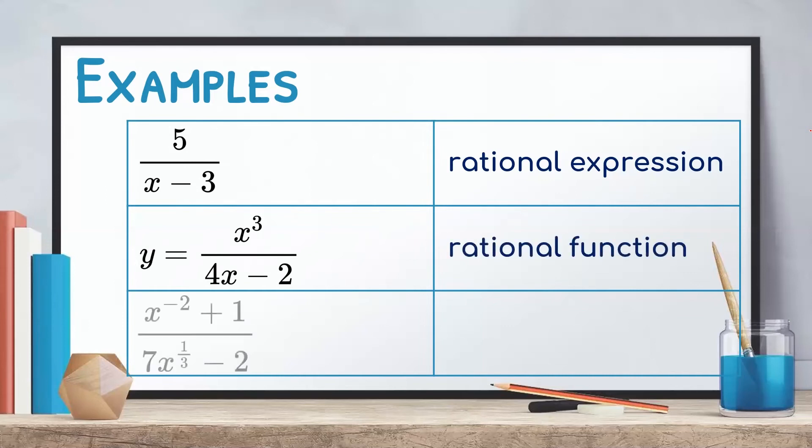For the third one, x raised to negative 2 plus 1 over 7x raised to 1 third minus 2. See that there is a negative and fractional exponent at the variable. Remember that if there is such, the expression will not be a polynomial. Therefore, this expression is not a rational expression. So we will be writing none of this.